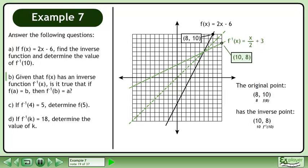The original point 8, 10 has the inverse point 10, 8. In the original point, the y coordinate of 10 is the same as f at 8. In the inverse point, the y coordinate of 8 is the same as f inverse at 10.